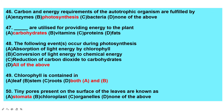Carbon and energy requirements of autotrophic organisms are fulfilled by photosynthesis — that is the answer. Carbohydrates are utilized for providing energy to the plant — carbohydrates is the answer.